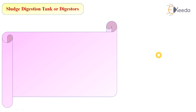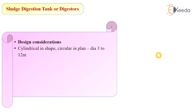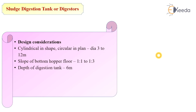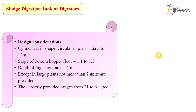Before starting the actual design, we need to know some design parameters and criteria. The digestion tank is cylindrical in shape and circular in plan, with an approximate diameter of 3 to 12 meters. The slope of the bottom hopper floor is 1:1 to 1:3. The depth of the digestion tank is 6 meters. In large plants, not more than 2 units are provided. The capacity provided ranges from 21 to 61 liters per capita per day.